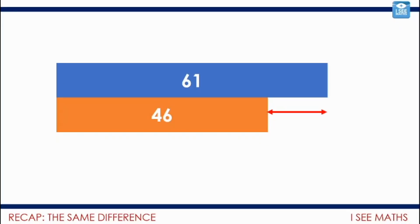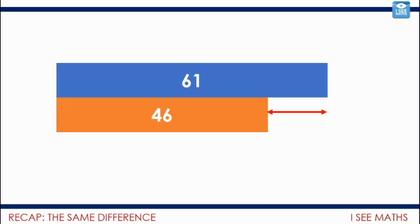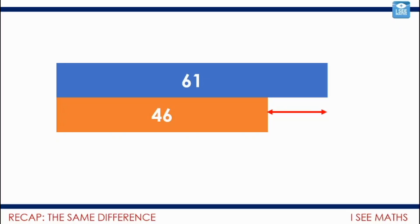Yesterday we dived really deeply into the difference between two numbers — let's say the difference between 61 and 46. That's actually the same as the difference between 59 and 44. All I do here is subtract 2 from both numbers, and actually those differences are the same. I just need to think: which calculation would I find easier? I actually find it easier doing 59 subtract 44. So rather than doing 61 subtract 46, I just take 2 from both numbers and do this subtraction instead. I think this is a wonderful technique.